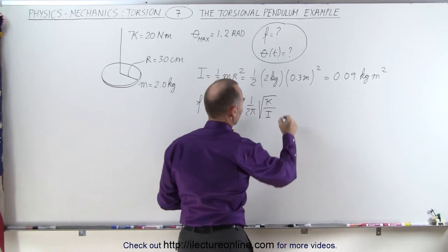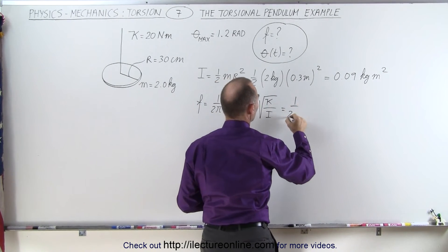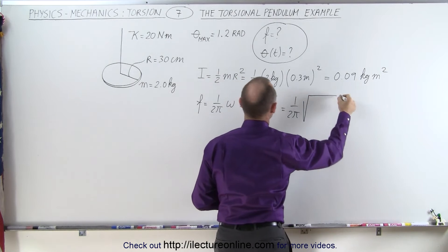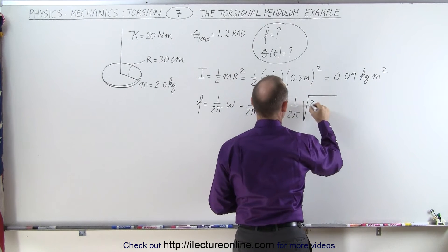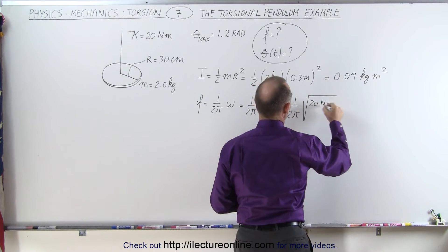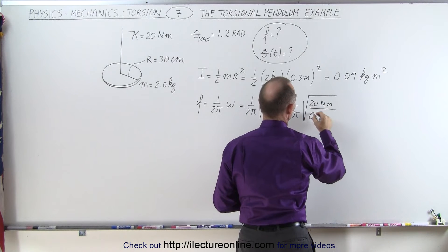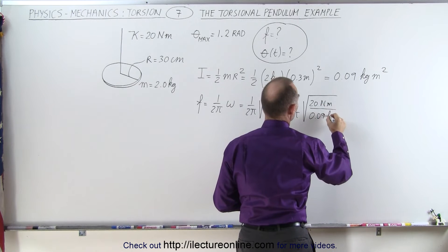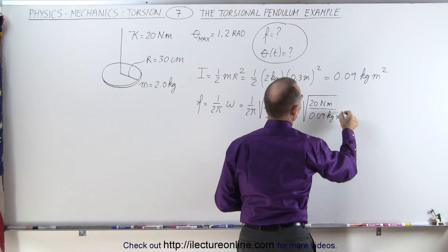moment of inertia I. So this equals 1 over 2π times the square root of 20 Nm divided by 0.09 kilograms meters squared.